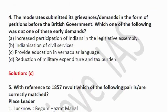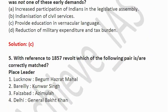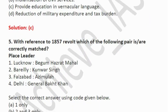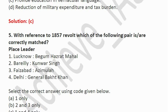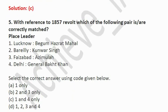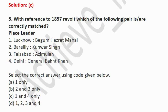The fifth question: with reference to the 1857 revolt, which of the following pairs is correctly matched? Lucknow — Begum Hazrat Mahal; Bareilly — Kunwar Singh; Faizabad — Azimullah; Delhi — General Bakht Khan. Begum Hazrat Mahal from Lucknow is correct. Kunwar Singh was not from Bareilly — he was from Bihar, specifically the Ara district. Faizabad was not led by Azimullah but by Maulvi Ahmadullah. Delhi and General Bakht Khan is correct. Only statements 1 and 4 are correct, so the answer is C.